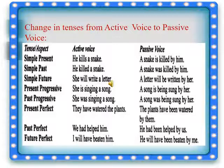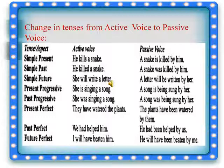Past progressive, that is past continuous tense: 'She was singing a song' becomes 'A song was being sung by her.' Present perfect tense: 'They have watered the plants' becomes 'The plants have been watered by them.' Past perfect tense: 'We had helped him' becomes 'He had been helped by us.' Future perfect tense: 'I will have beaten him' becomes 'He will have been beaten by me.'